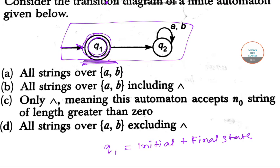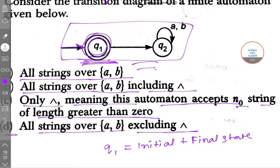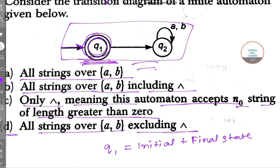The options are: A — all strings over AB; B — all strings over AB including the null string; C — only the null string, meaning this automaton accepts only strings of length zero; and D — all strings over AB excluding the null string. Since Q1 only accepts the null string, option C is the correct answer.